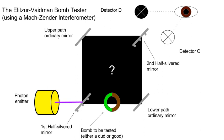Consider a collection of light-sensitive bombs, of which some are duds. When their triggers detect any light, even a single photon, the light is absorbed and the bomb explodes. The triggers on the dud bombs have no sensor, so the photon can't be absorbed. Thus the dud bomb will not detect the photon and will not detonate. Is it possible to determine which bombs are functional and which are duds without detonating all of the live ones?